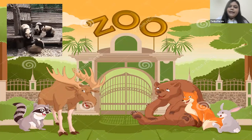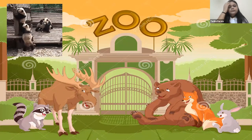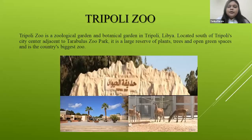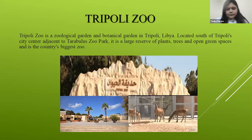Now we will learn about the Libya Zoo. Tripoli Zoo is a zoological garden and botanical garden in Tripoli, Libya. It is located south of Tripoli city center and adjacent to Tarabulus Zoo Park. It is a large area serving plants, trees, and open green spaces, and is the country's biggest zoo.